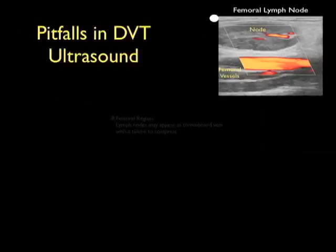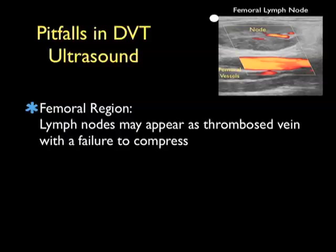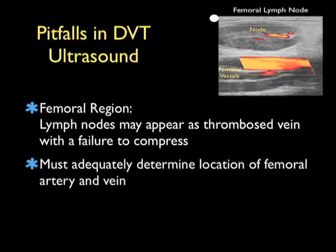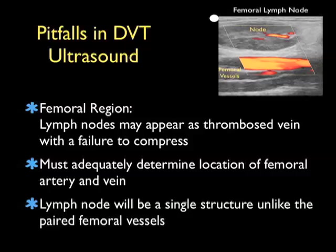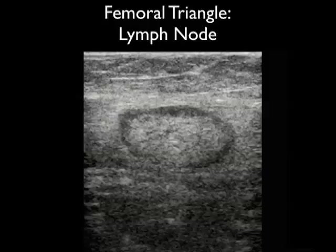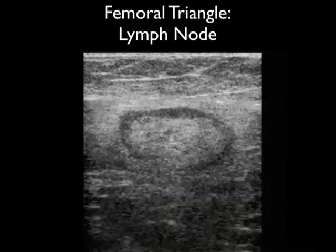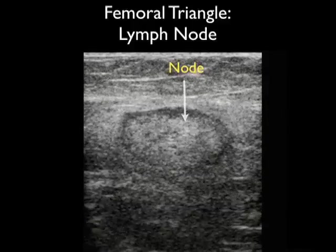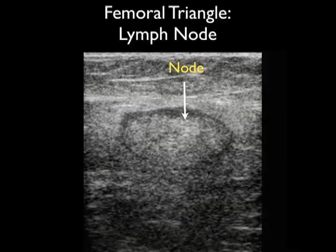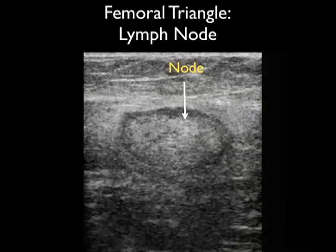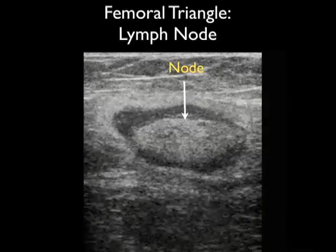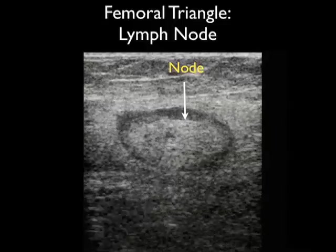Now let's turn to a discussion of some potential pitfalls within DVT ultrasonography. In the femoral region, lymph nodes may appear as a thrombosed vein with a failure to compress on bedside sonography. Therefore it's very important to adequately determine the location of the femoral artery and vein and compare that to the location of the lymph node. The lymph node will be a single structure unlike the paired femoral vessels, and will usually be seen more superficial to the vascular structures. Here's an example of a femoral lymph node — notice it has the appearance of what could be construed as a DVT, but this is the normal ultrasound finding of a lymph node. Notice it is a single structure and not related to the common femoral artery as a DVT would be within the common femoral vein.